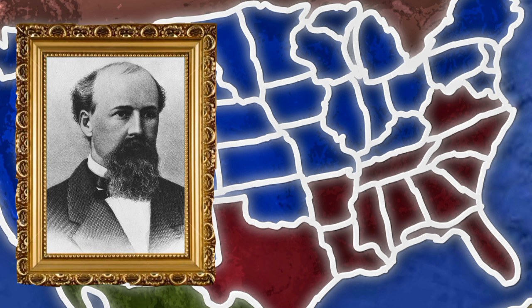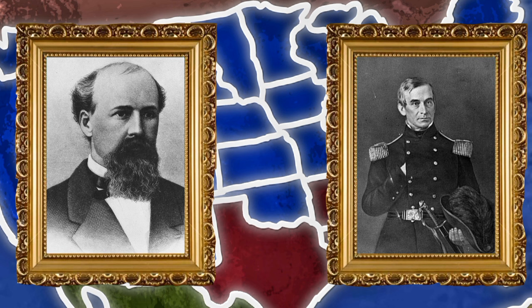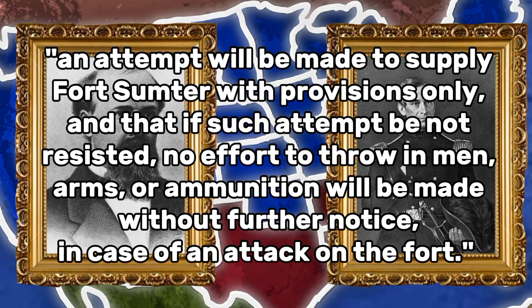The relief expedition was to be commanded by former naval captain Gustavus Fox, who proposed a plan for nighttime landings of smaller vessels than the Star of the West. Fox's orders were to land at Sumter with supplies only, and if opposed by the Confederates, to respond with U.S. Navy vessels and then land both supplies and men. This time, Major Anderson was informed of the impending expedition. On April 6, Lincoln notified Pickens that an attempt would be made to supply Fort Sumter with provisions only.